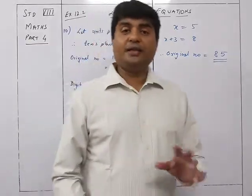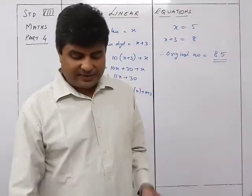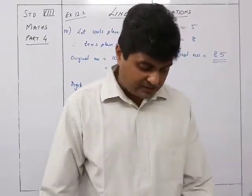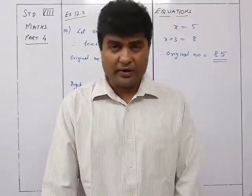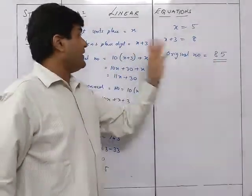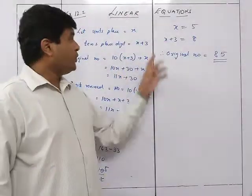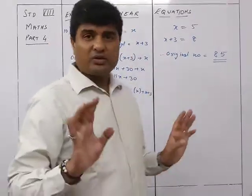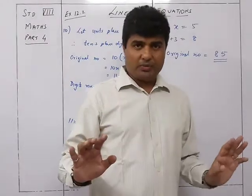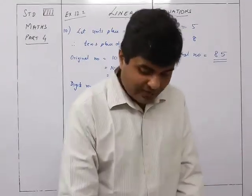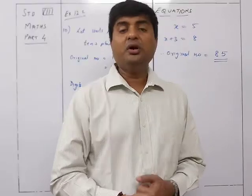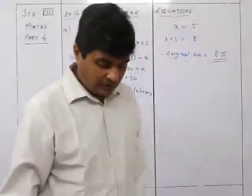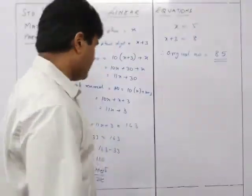If you had taken x minus 3 instead, you would get 58, but that's fine — both 85 and 58 will sum to 143. That's why in the answer key both 85 and 58 are given as valid answers. That was sum number 10.